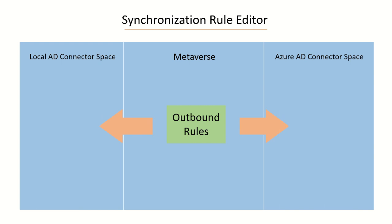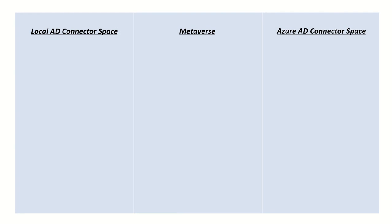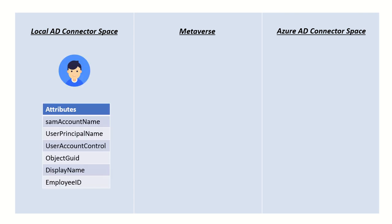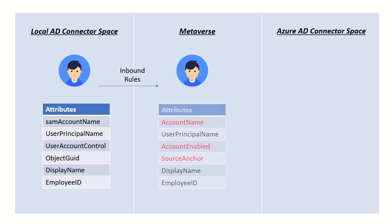Let's talk about this in more detail using a specific user object. The first step to sync an object from on-premises to Azure Active Directory is running the import cycle. When we run import on the Local AD Connector, a replica or view of that object gets created in the Local AD Connector Space. When you then run the sync process, this replica or view object is also created in the Metaverse, and the rules that get applied at this stage are the inbound rules. All the attribute flow mapping and the renaming of attributes according to object type is defined in these rules.